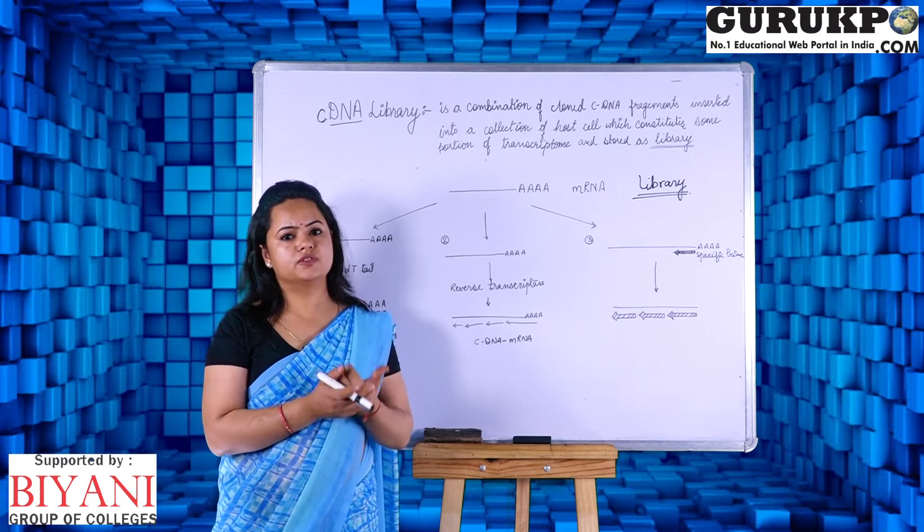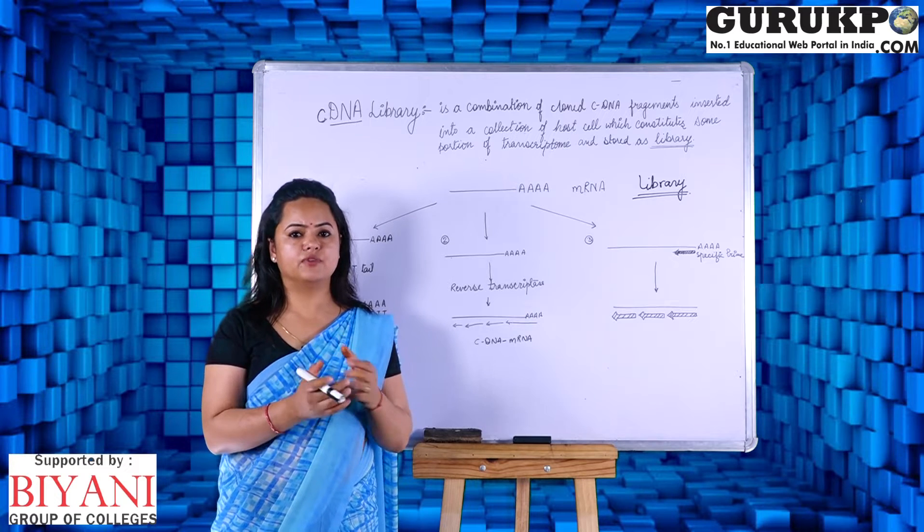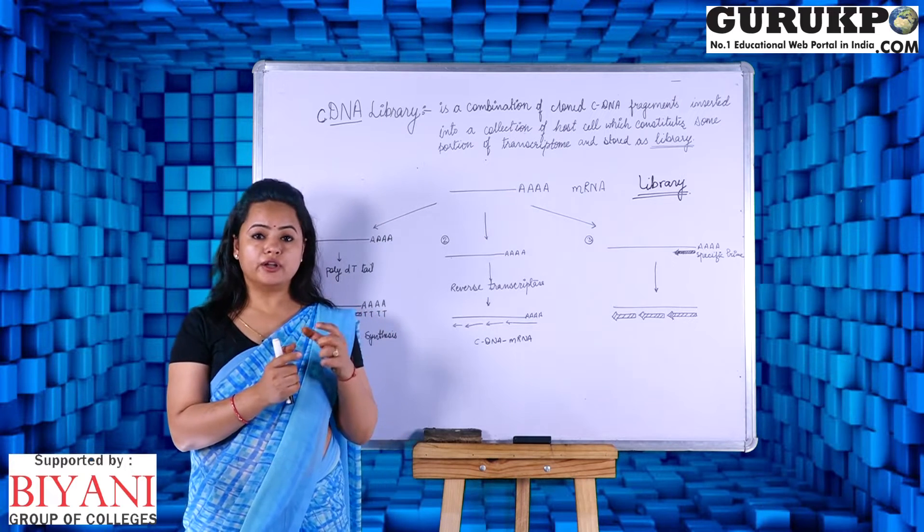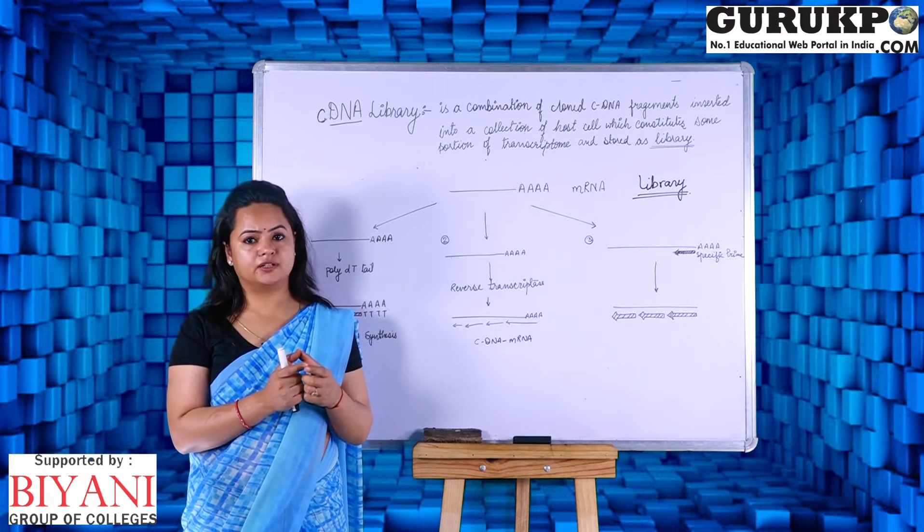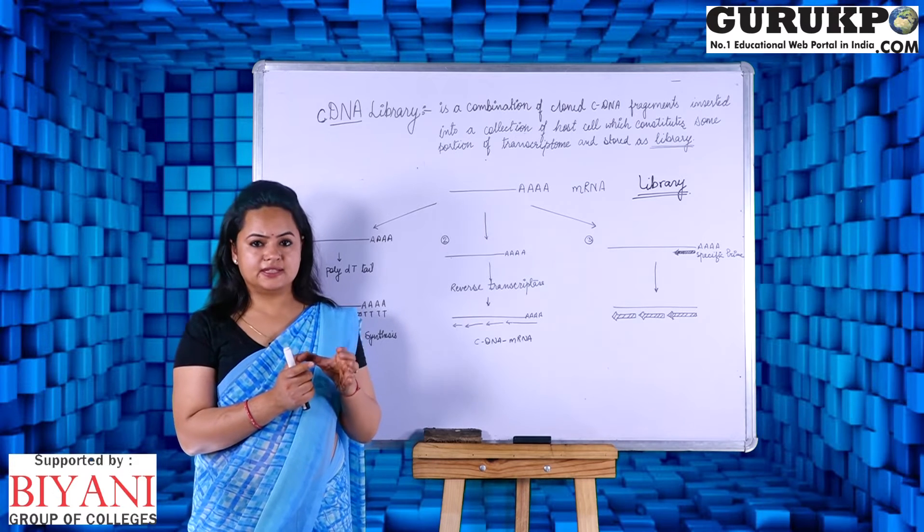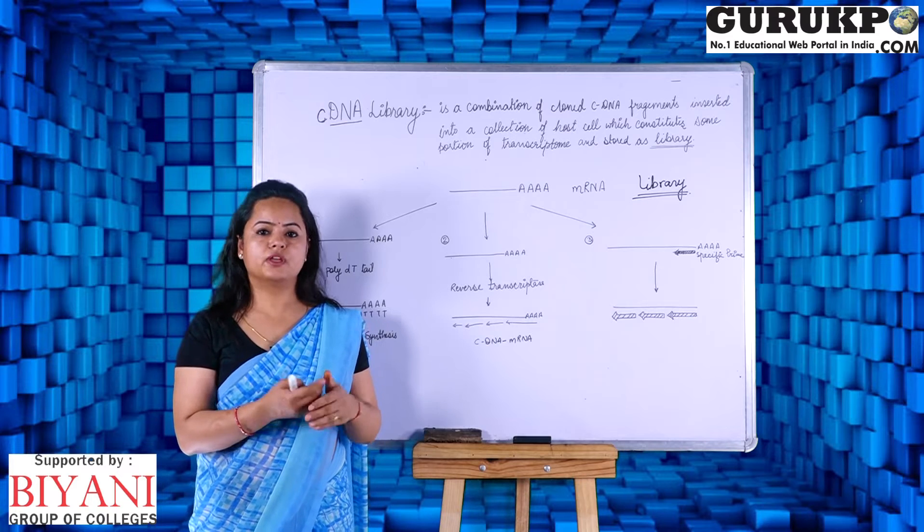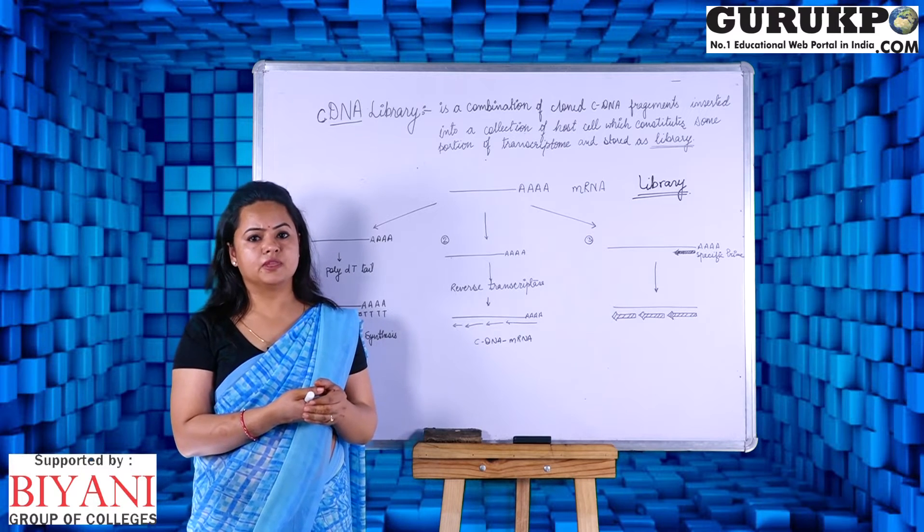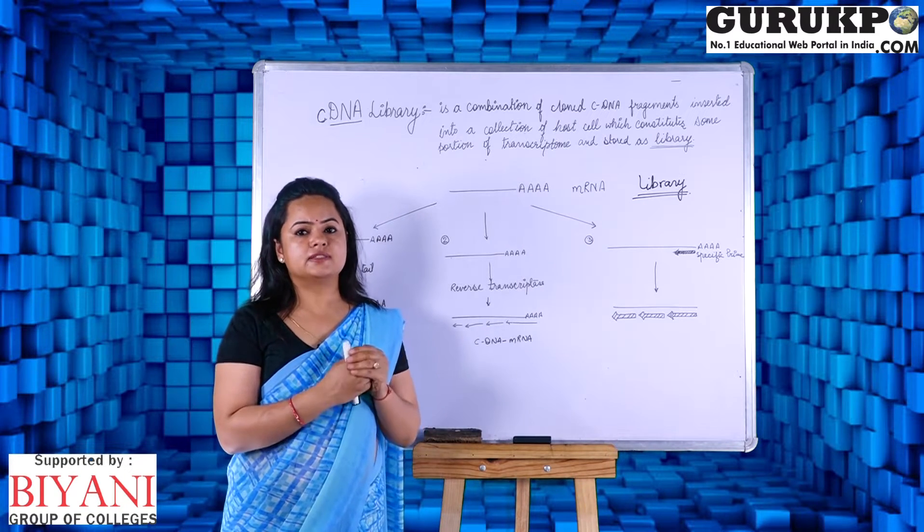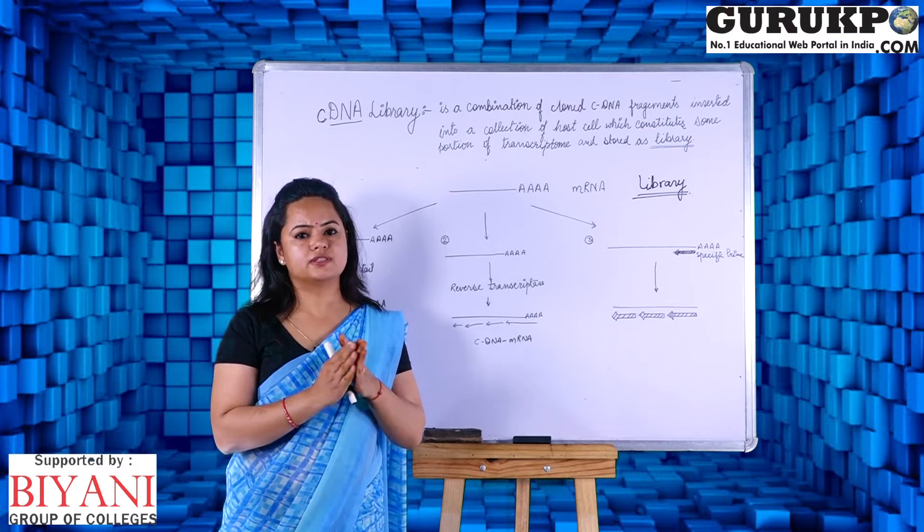But in genomic library, what we do is, we just restrict the DNA fragments and we can place the DNA fragment according to the size and capability of the vector, and we can easily ligate that portion and constitute by cloning. We can create a genomic library, but we cannot create the cDNA library exactly using the same method.